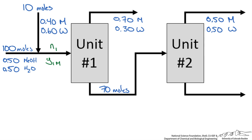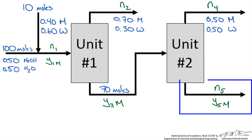So we have N1 and Y1M entering unit 1. We do not have a flow rate for the top stream so we call that N2. We do not have a composition for methanol in the bottom stream so we call that Y3M. We do not have a flow rate leaving unit 2's top stream so we call that N4, and we have no information for the last stream so we call that N5 and Y5M for methanol. In total we have 7 unknowns.